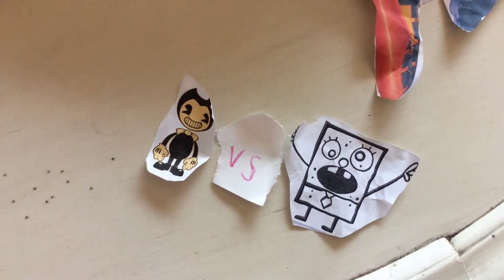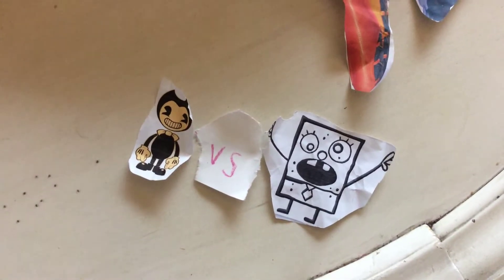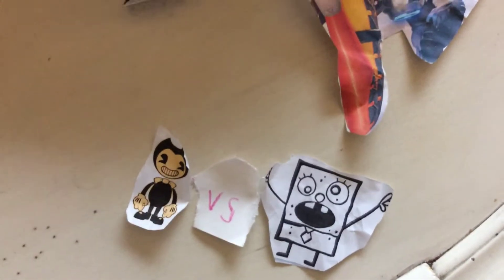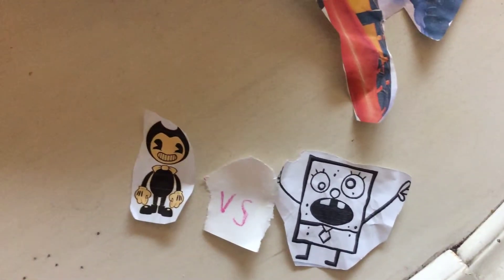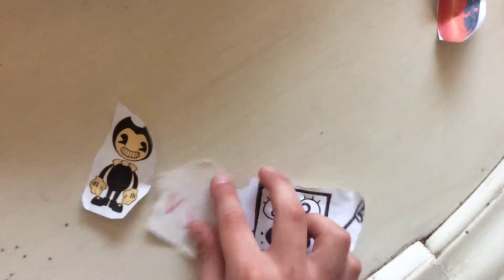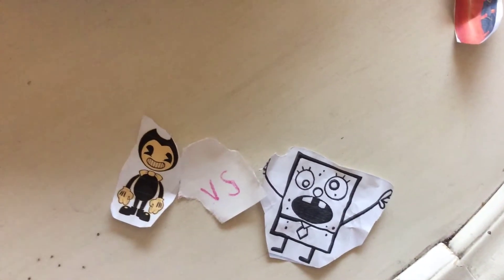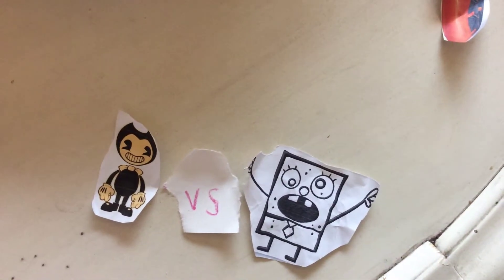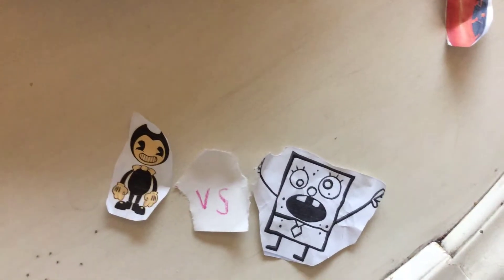Now our winner is Doodlebob! There are many reasons. Bendy could just be erased by Doodlebob, he didn't think of that. Doodlebob spawned in an army. The army couldn't beat Bendy, but then he had a smart idea to erase him. He's very smart, Doodlebob. I think he would win in a fight against Bendy.